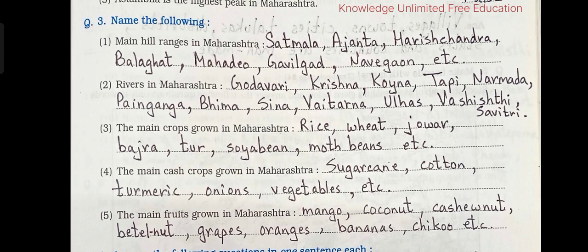2. Rivers in Maharashtra: Godavari, Krishna, Koina, Tapi, Narmada, Penganga, Bhima, Sina, Vaitarna, Ulhas, Vaishishti, Savitri, etc.